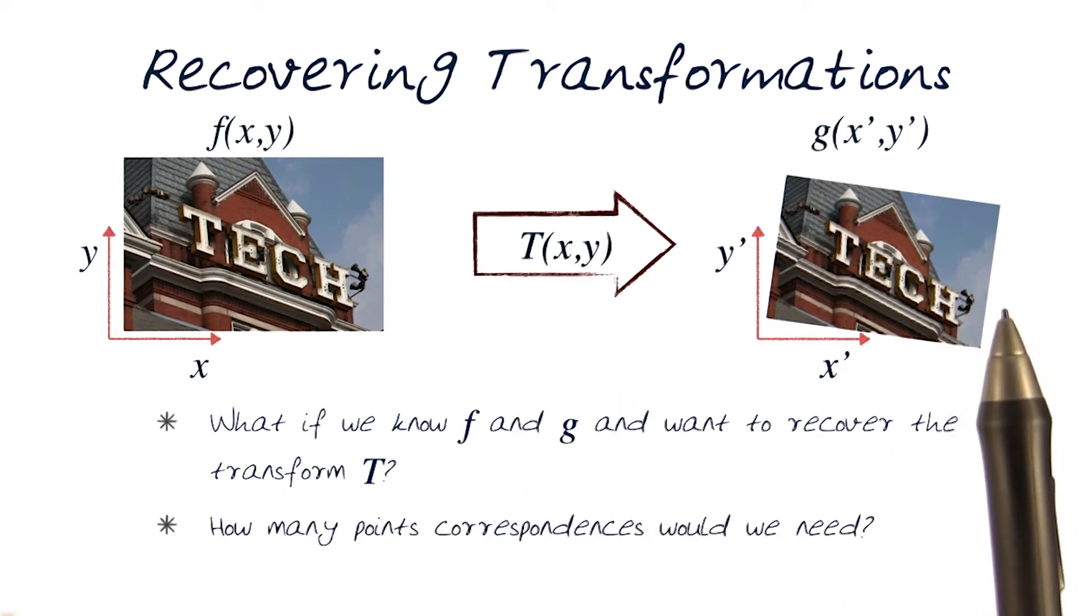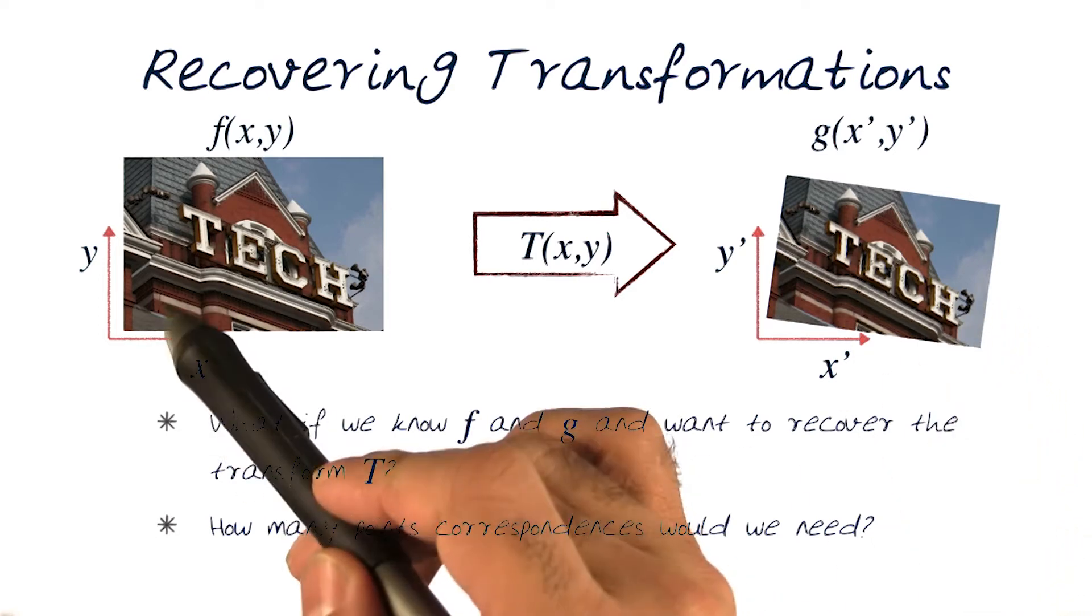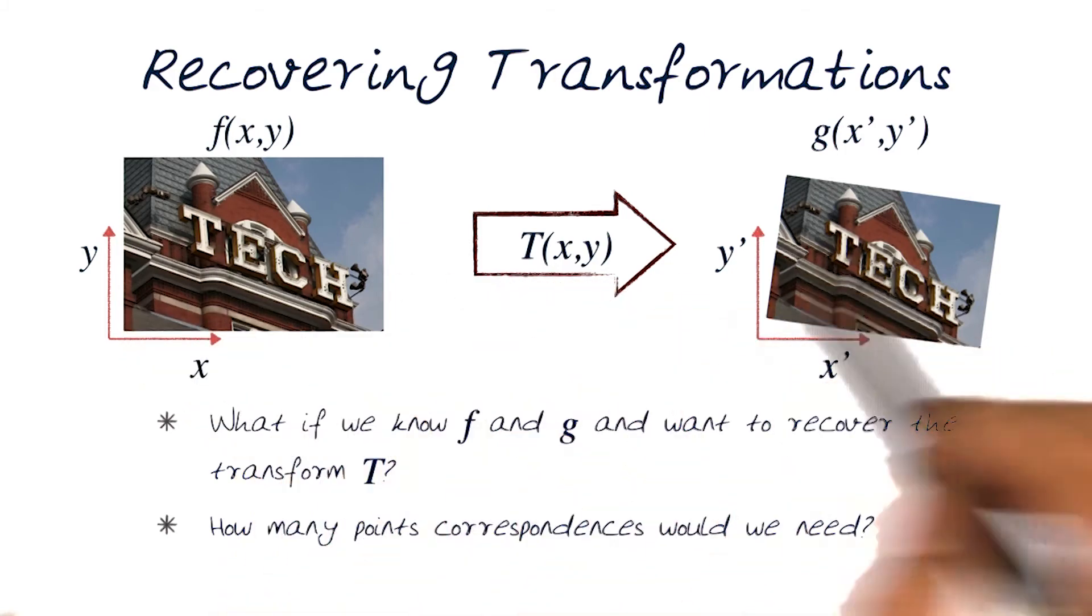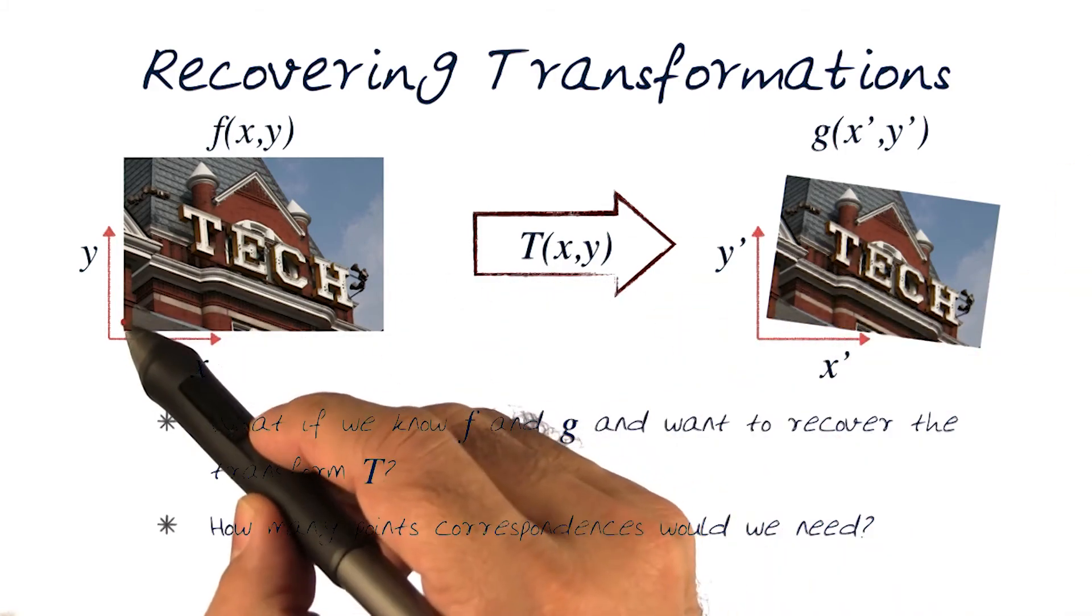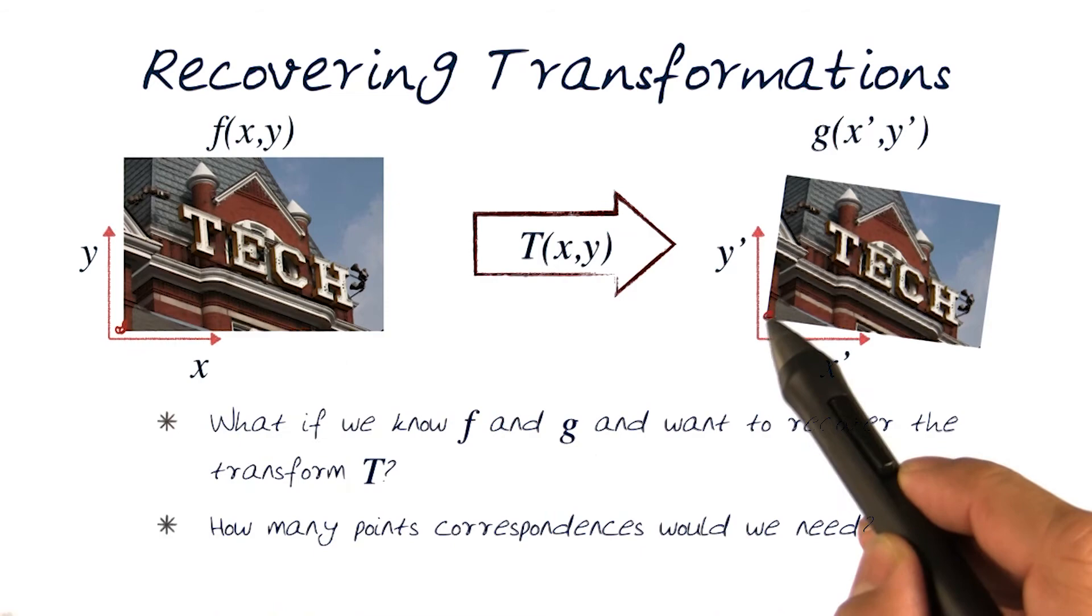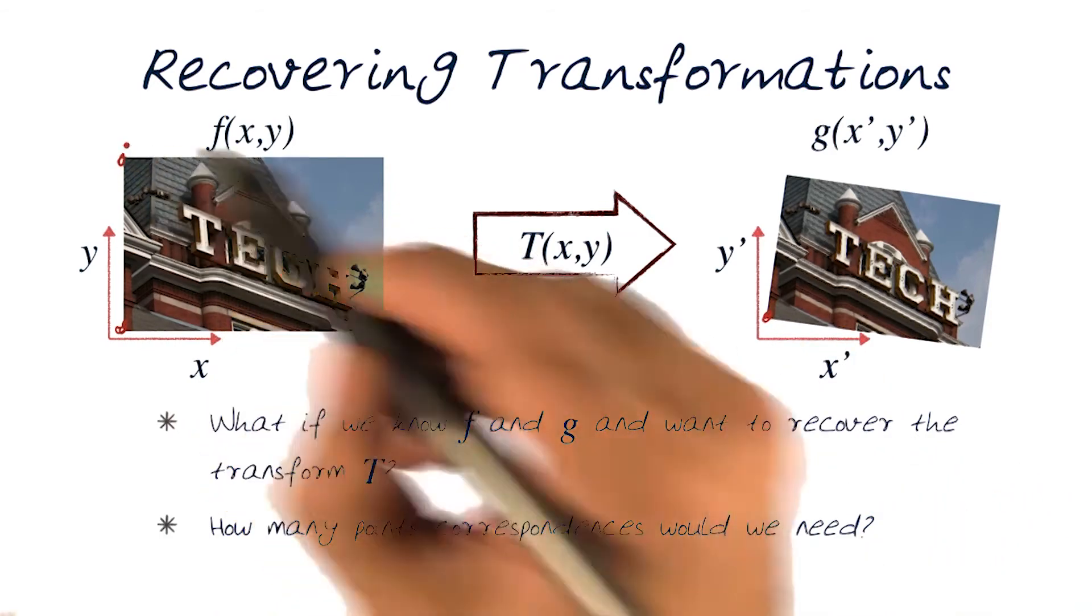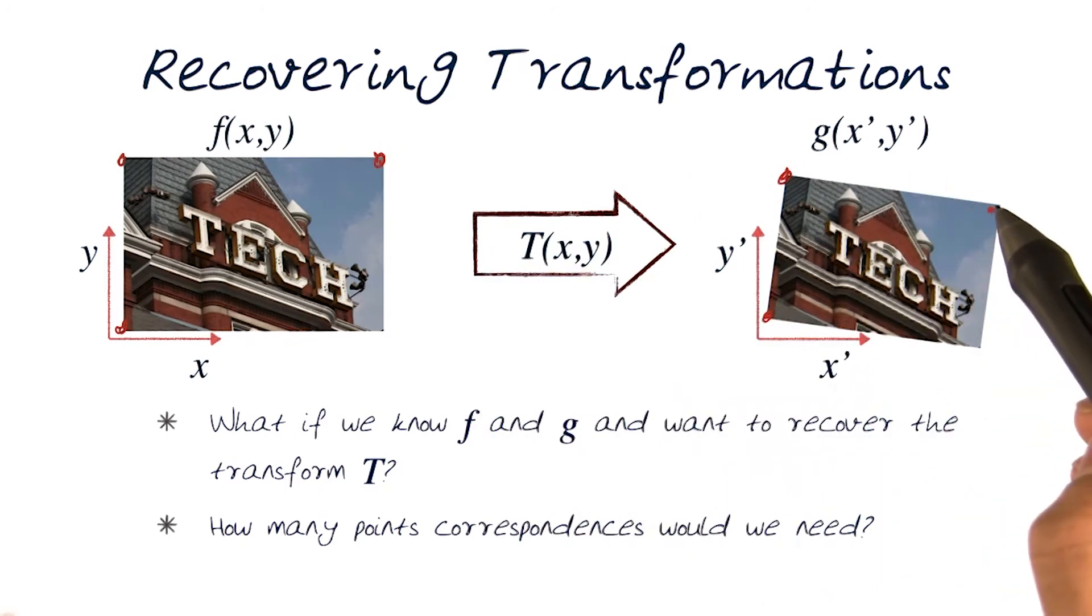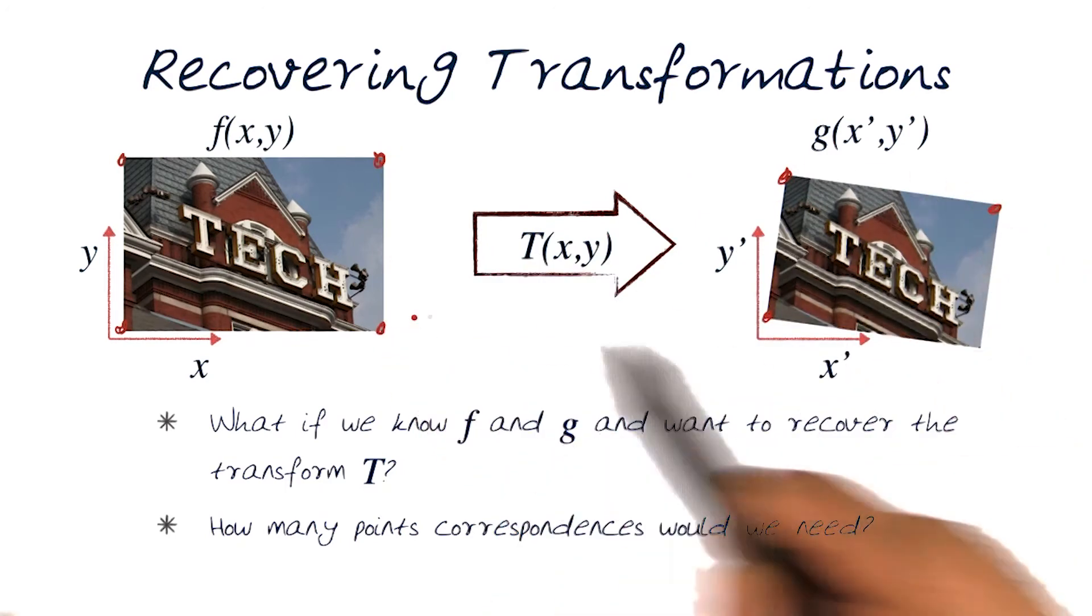To achieve this, one question is: how many points on both of these images do I need to know? For example, would I need to know a point here that corresponds to this point here? A point here that corresponds to this point here. This point corresponding to this, and this point corresponding to this.